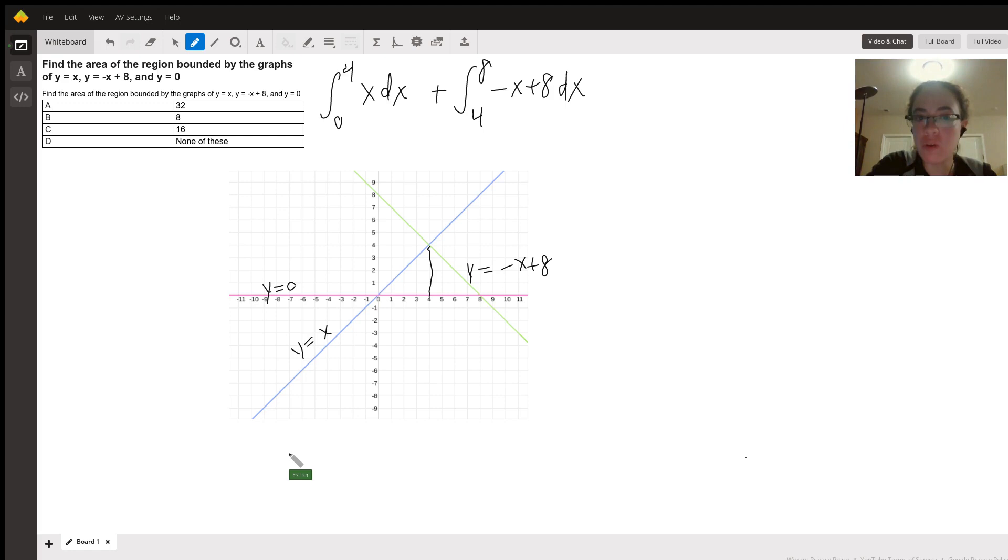At this point, all you need to do is apply the polynomial rule. And so the polynomial rule for integration, the first integral becomes x squared over two, evaluated from zero to four.